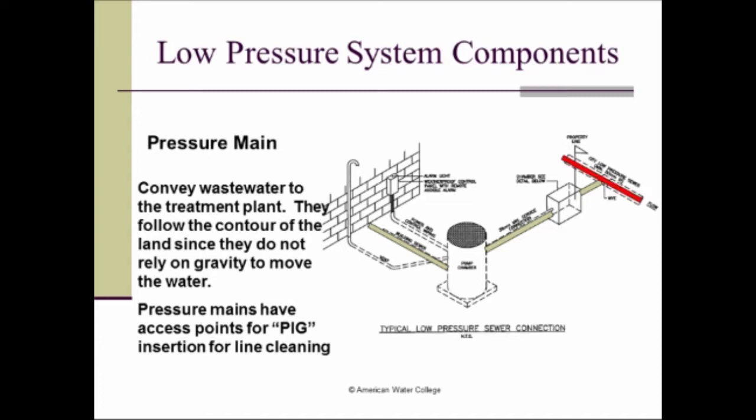Also within the pressure mains, they have access points for pig insertion for line cleaning. So those are the main components of a low pressure system.